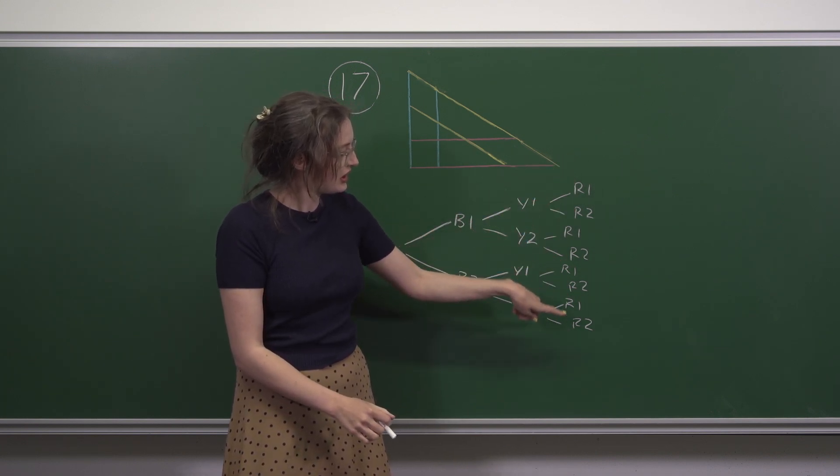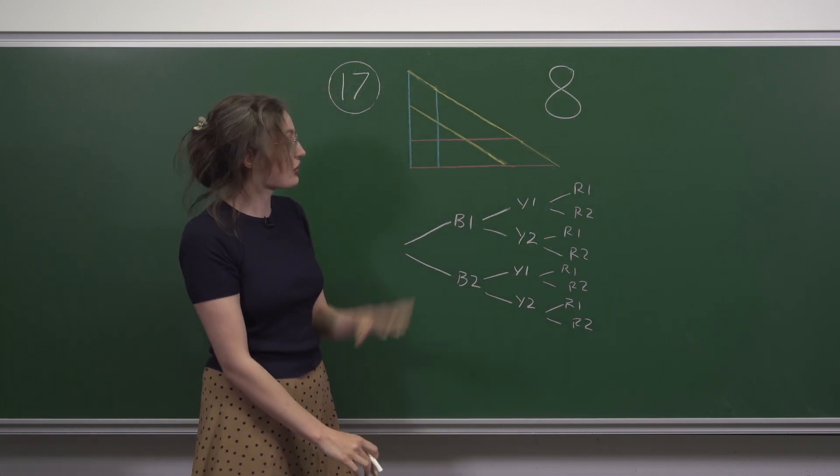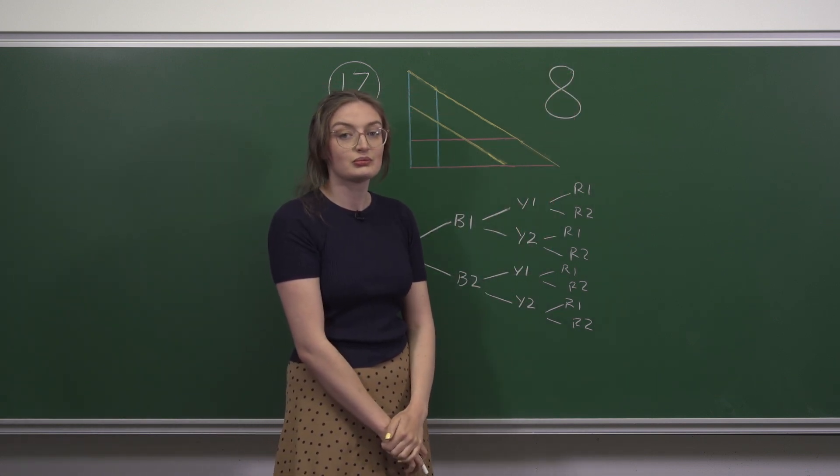So here we have eight. So in total, there are eight triangles in the diagram, which is option C.